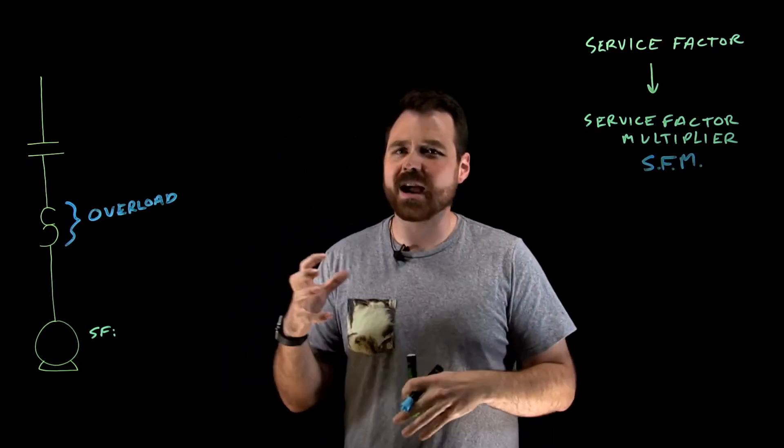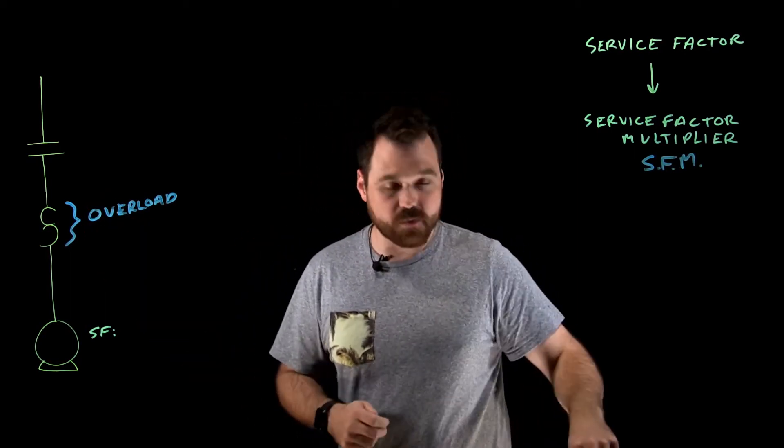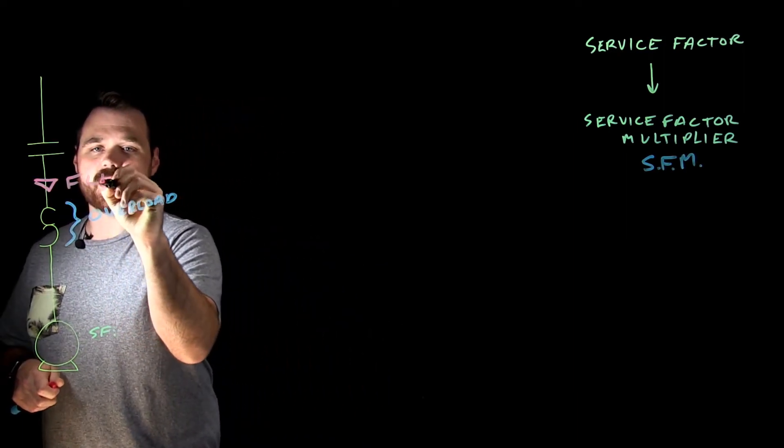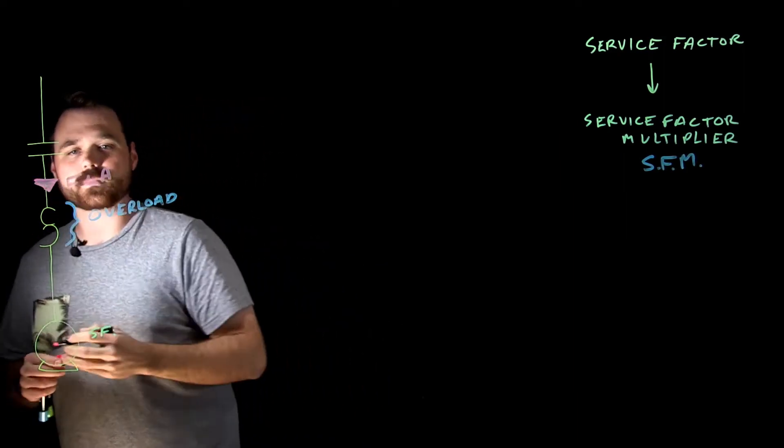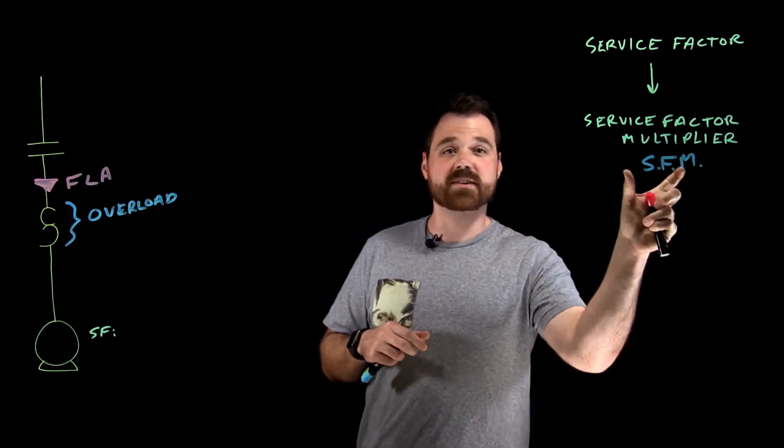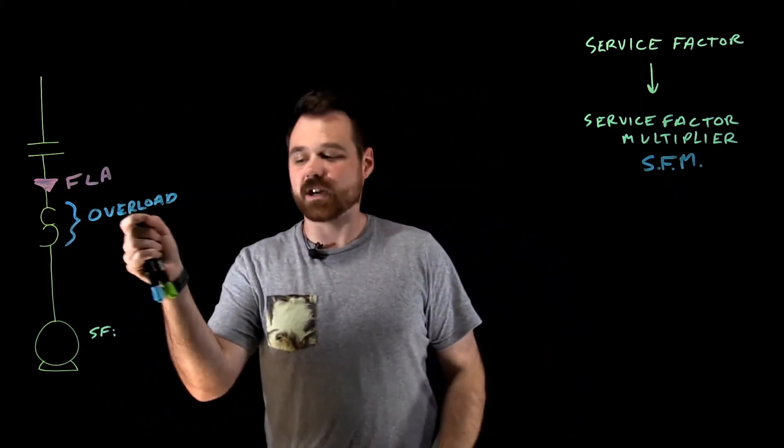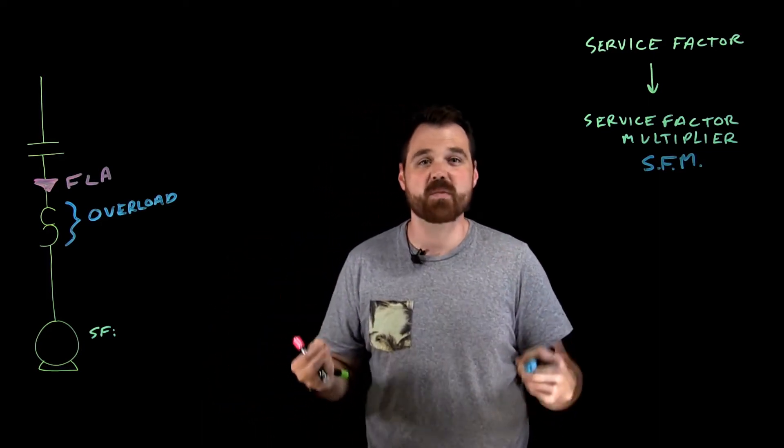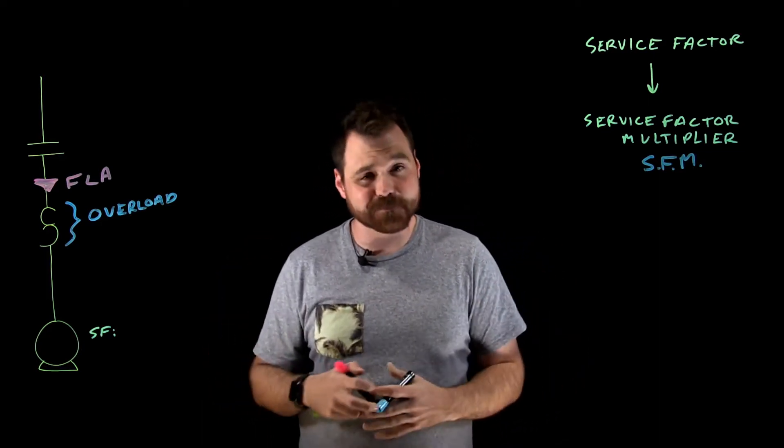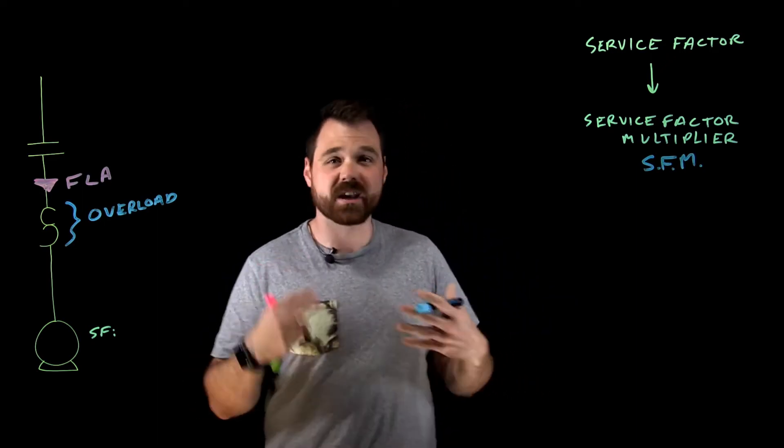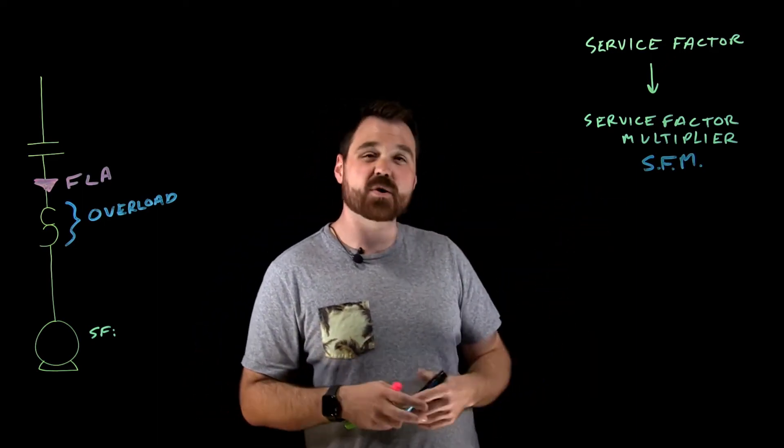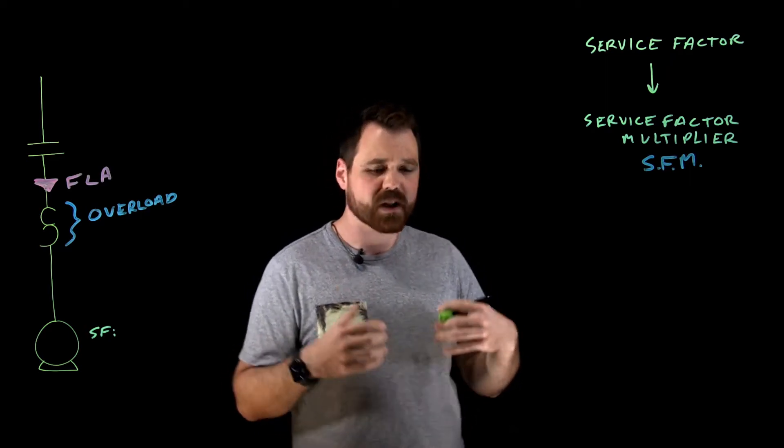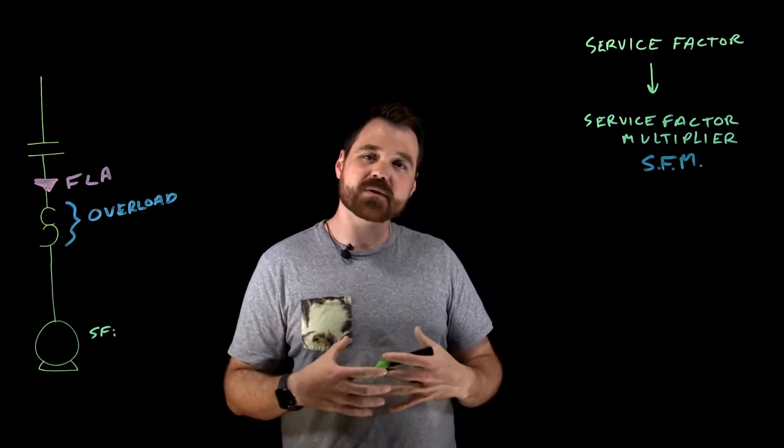The code allows us to take the FLA of the motor. We know that there's going to be a FLA flowing through that motor. We multiply it by the service factor multiplier, and that tells us our overload setting or the maximum allowable overload setting. I'm not going to do any calculations here. I just want to quickly review how that service factor multiplier works.